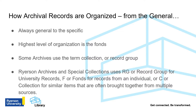Archival records are always organized from the general to the specific. The highest level of organization is the fonds. Some archives may use the term collection or record group. Ryerson University Archives and Special Collections uses RG or record group for university records, F or fonds for records from a single individual, and C or collection for similar items that have often been brought together from multiple sources.